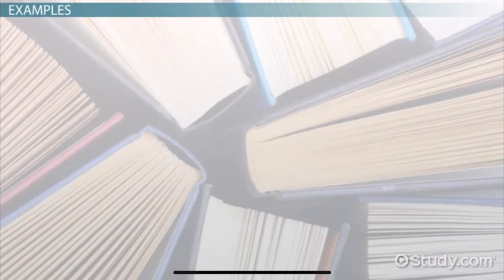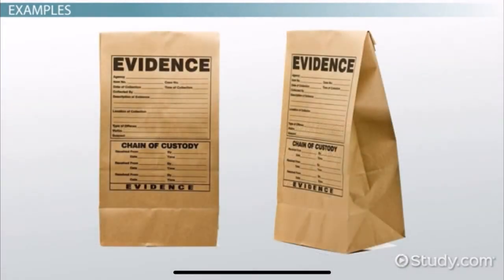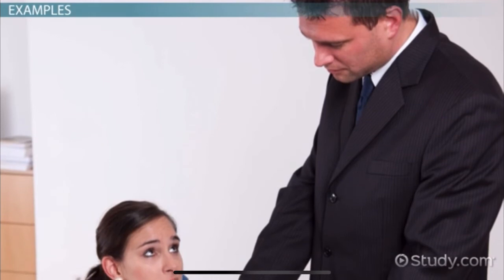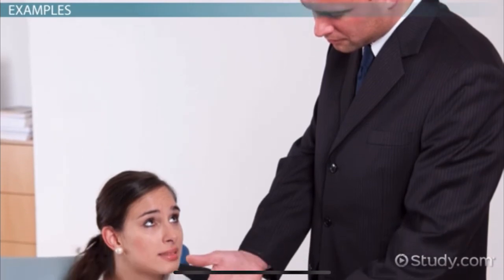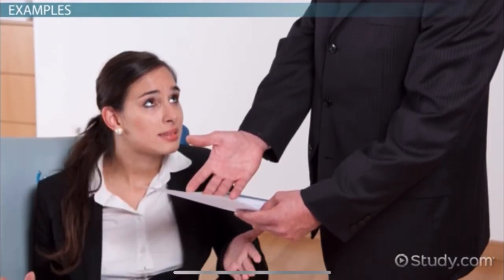Consider these questions for the following example: 'The company's president is an idiot. Anyone can see that.' This example is subjective, because the writer is not providing any information that can be supported. Anyone can't see it, because the writer didn't provide evidence. The statement is based on the writer's opinion of the president, and, if anything, can be argued in the same manner by someone who favors the president.